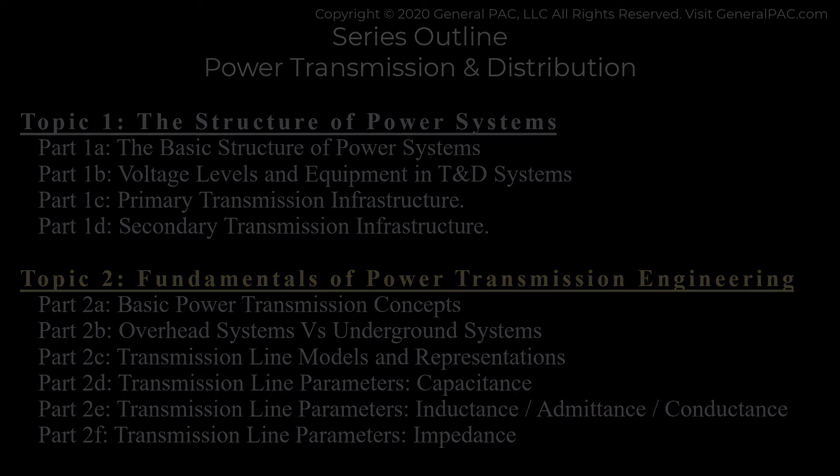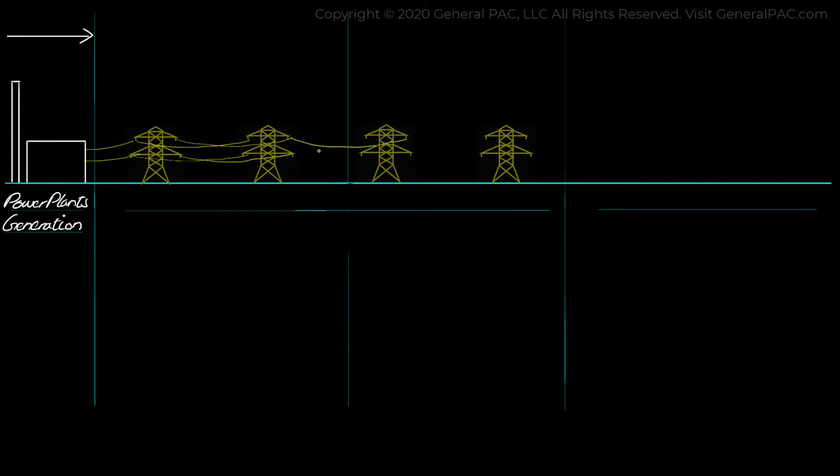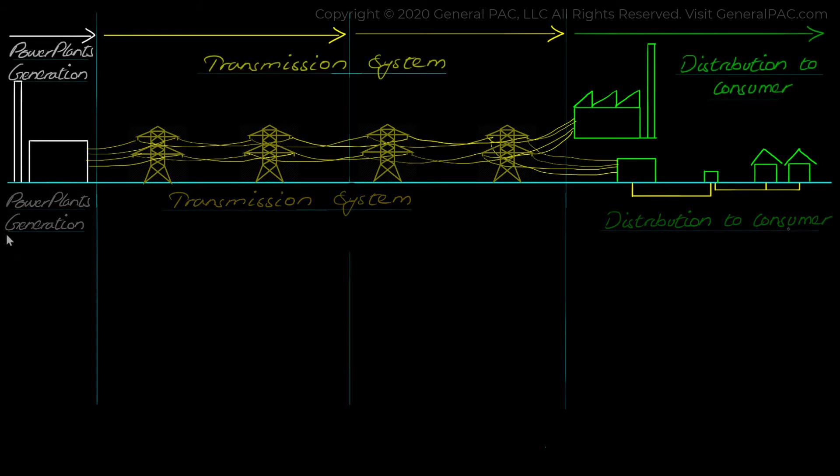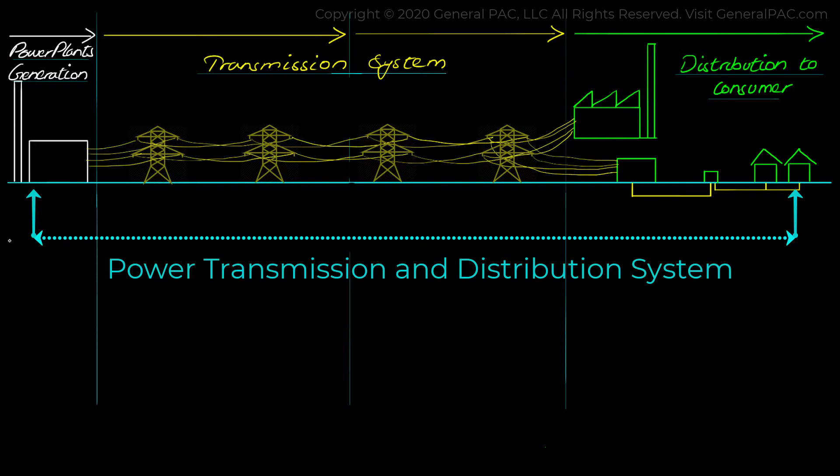Now let's get back to our topic. Traditional power plants generate electricity. Then this electricity is transferred through the transmission system and then distributed to different consumers that use electricity for different purposes. Collectively, the whole system involved in power delivery is known as the transmission and distribution system.